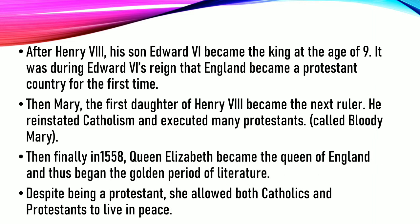After Henry VIII, his son Edward VI became king at the age of nine. It was during the reign of Edward VI that England became a Protestant country for the first time. Then Mary, the first daughter of Henry VIII, became the next ruler. She reinstated Catholicism and executed many Protestants — for that she is called Bloody Mary. Finally, in 1558, Queen Elizabeth became the queen of England, beginning the golden period of literature known as the Elizabethan period.